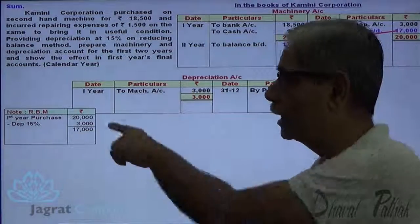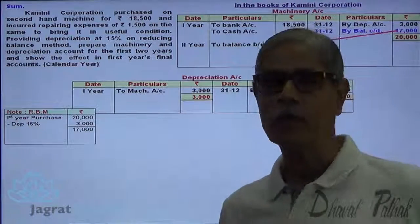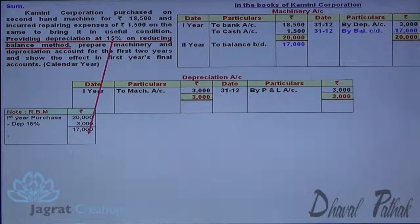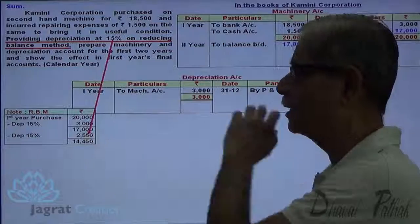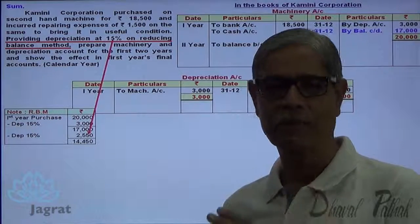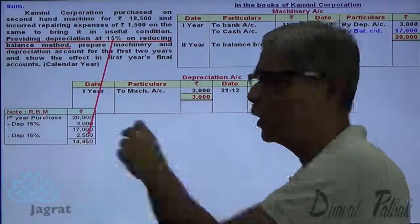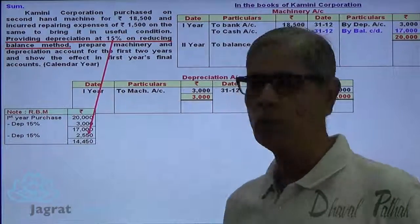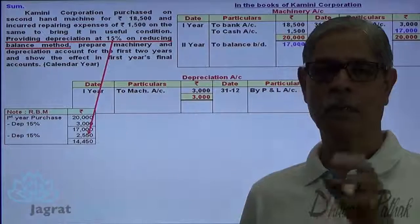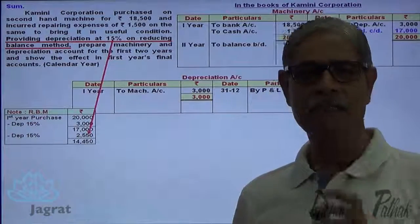In the second year, I am required to calculate depreciation on the reducing balance method. The opening balance is $17,000. $17,000 × 15% works out to $2,550. So the depreciation for the second year is $2,550. Deducting from the reduced balance of $17,000, the closing balance at the end of the second year is $14,450.